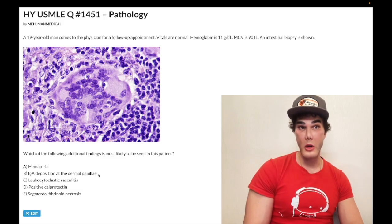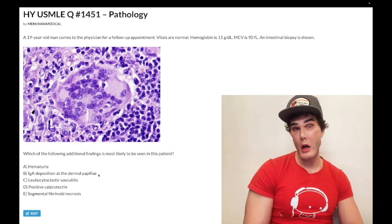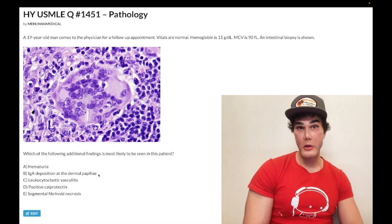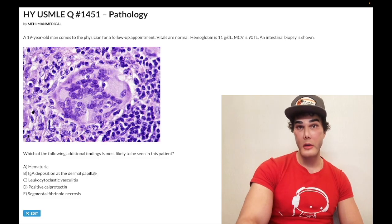Don't confuse with pyoderma gangrenosum, which is a crater basically on the arm with necrotic debris. You can see it in ulcerative colitis or erythema nodosum, redness of the shins, paniculitis, which means inflammation of subcutaneous fat. You can see that in basically any autoimmune disease, sarcoidosis, for instance, but you can also see that in Crohn disease classically with USMLE. Wrong answer.